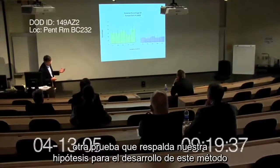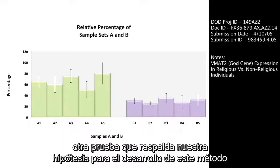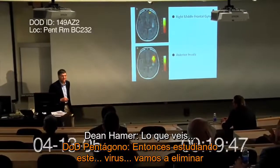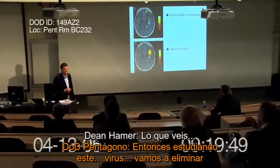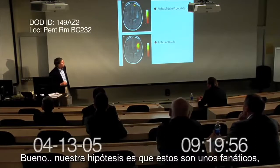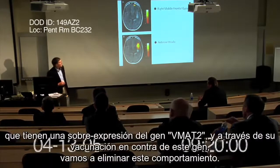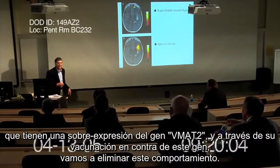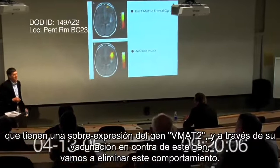Another evidence that supports our hypothesis for the development of this approach. What you're suggesting here is that by spreading this virus, we're going to eliminate individuals from donning a bomb vest and going into a market and blowing up the market. So our hypothesis is that these are fanatical people, that they have overexpression of the VMAT2 gene, and that by vaccinating them against this, we'll eliminate this behavior.